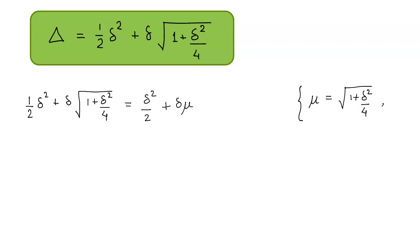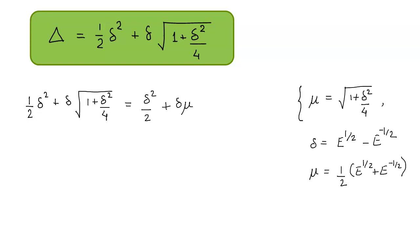So here we are going to write this is equal to delta squared upon 2 plus delta into mu. The next step is we have to convert these operators in terms of shift operators. We have the relation: delta is equal to e raised to power 1/2 minus e raised to power minus 1/2. Similarly, the average operator mu is equal to 1/2 times e raised to power 1/2 plus e raised to power minus 1/2. Now we are going to substitute all these values in our relation.